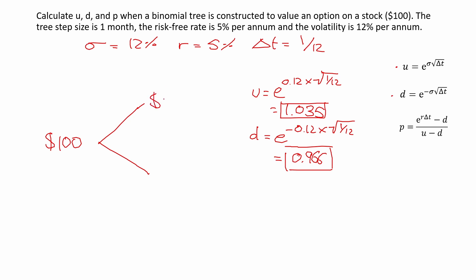In the bad state when it goes down, we would do $100 times d, which is 0.966, which gives us $96.60. So here we have our one-step binomial tree constructed.